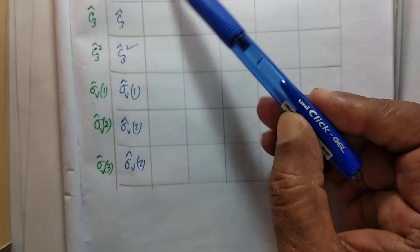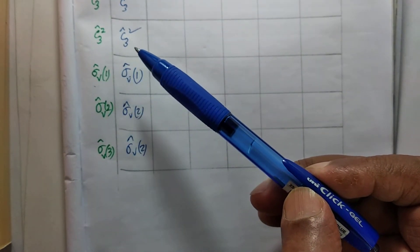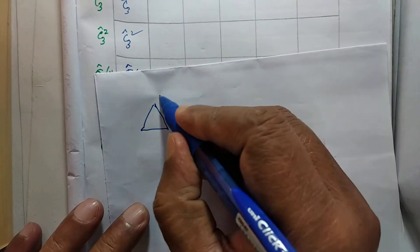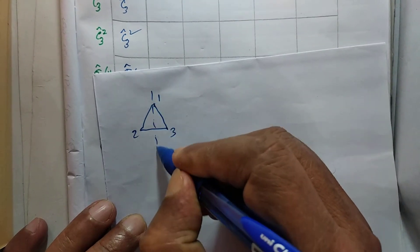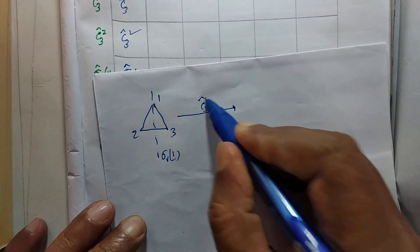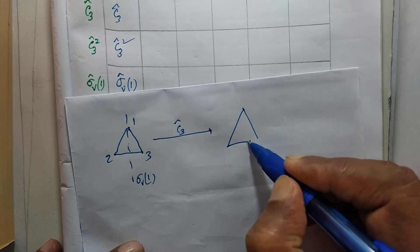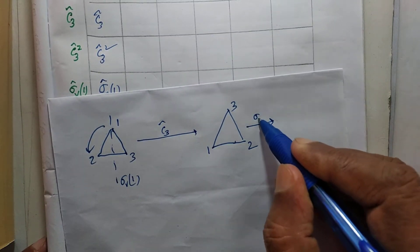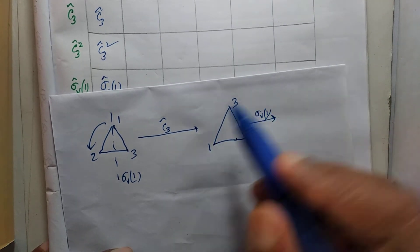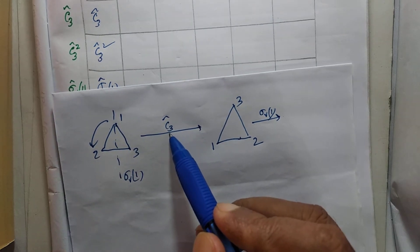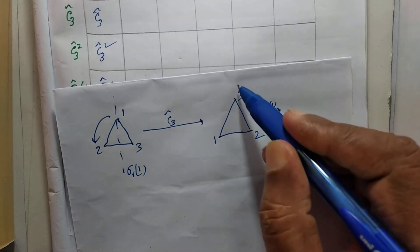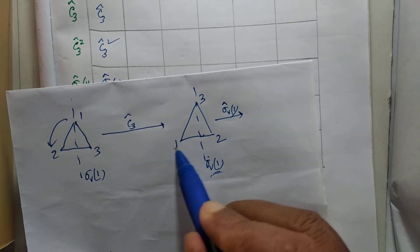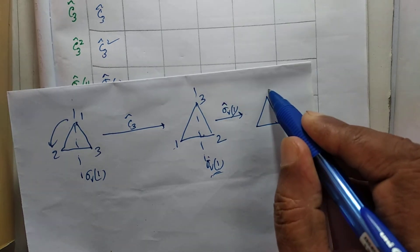Let us now calculate C3 followed by σV1. Starting with positions one, two, three, we first carry out C3. The resulting configuration after rotation is: one comes here, two comes here, and three here. Then we carry out σV1. We know that atoms are displaced during a symmetry operation, but the elements of symmetry do not move. So σV1 is still the same plane. By the σV1 operation, one and two are exchanged and three remains. This is our final configuration.